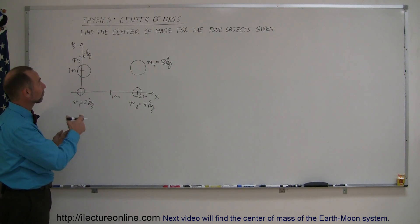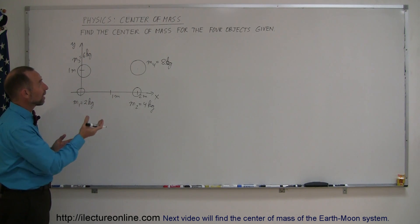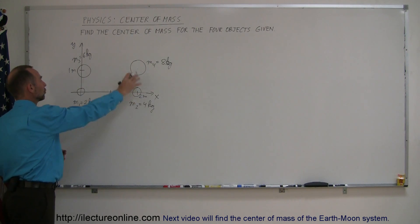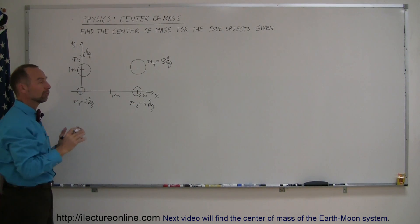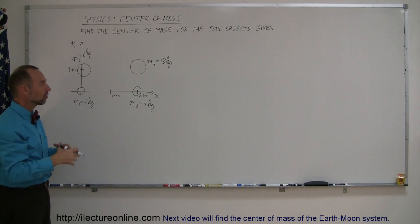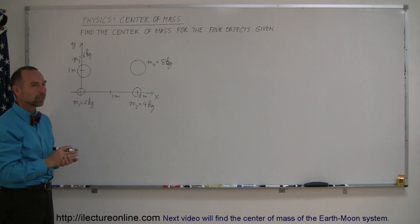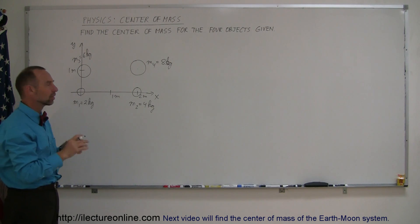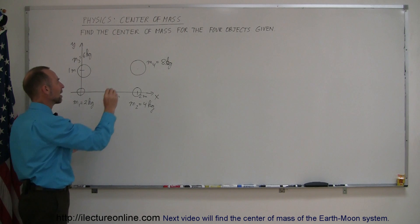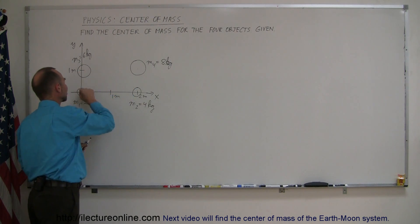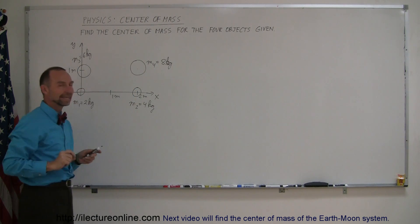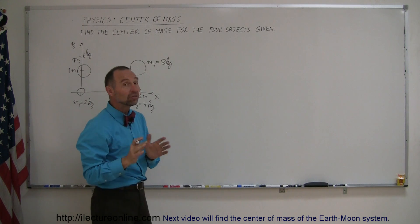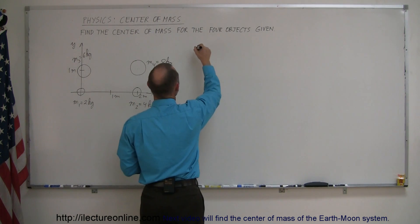It asks: find the center of mass for four objects given — mass 1, mass 2, mass 3, mass 4 — in four different locations, and what is the center of mass thereof. Assuming that each mass is a point object so that all of its mass can be considered to be located at that exact point indicated, you have to find the center of mass in each direction separately.